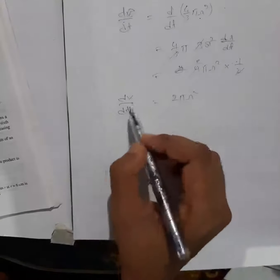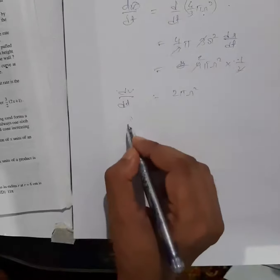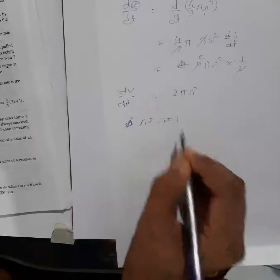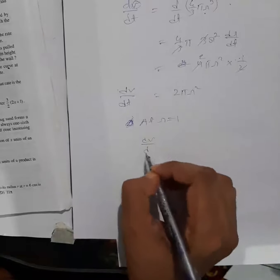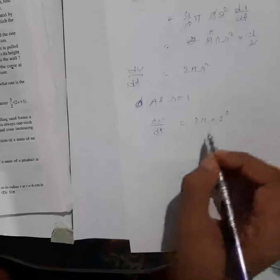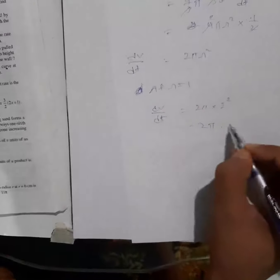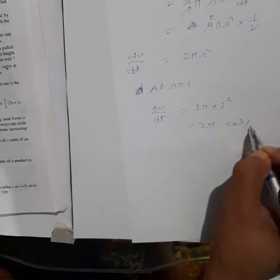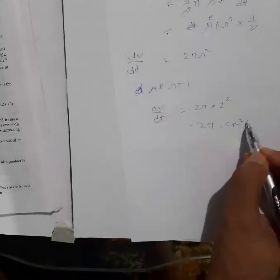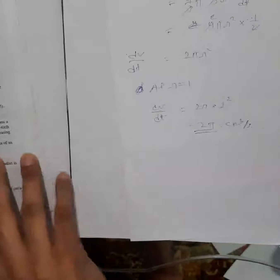This is the rate of change of volume. When the radius r = 1 centimeter, dV/dt = 2π(1)² = 2π. So the volume is increasing at the rate of 2π centimeters cubed per second.